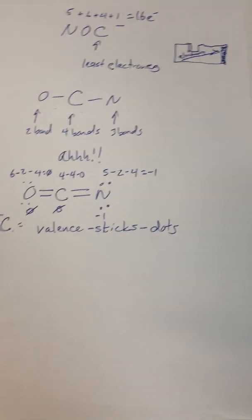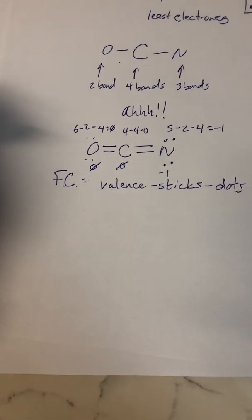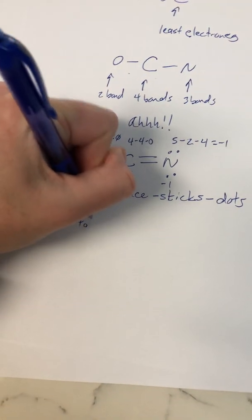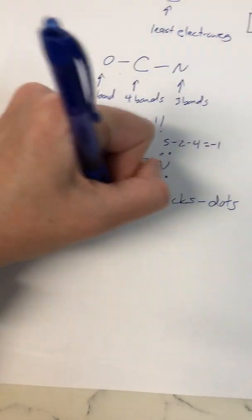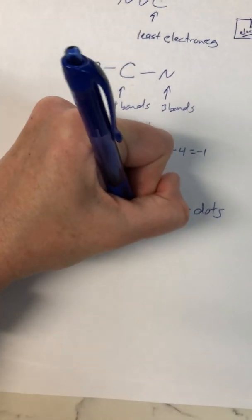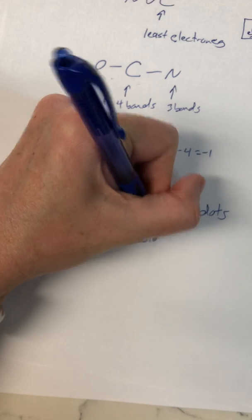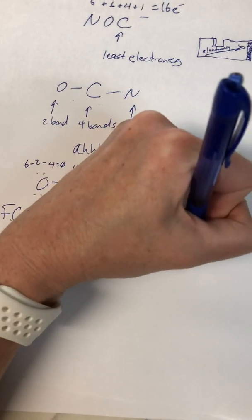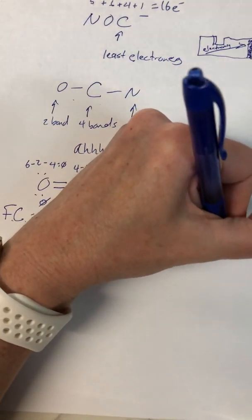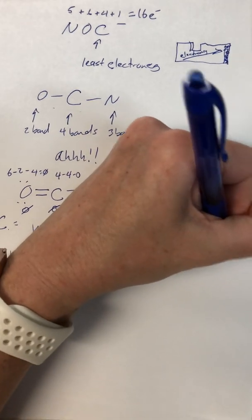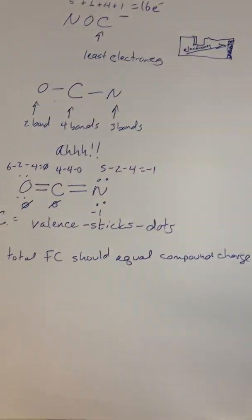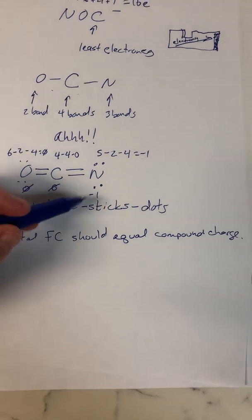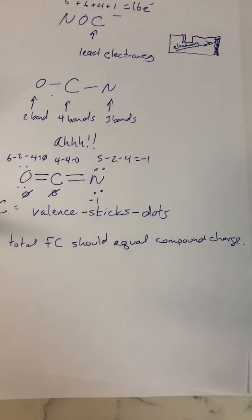For nitrogen: 5 valence electrons minus 2 sticks minus 4 dots equals a negative one formal charge. That's great because the total formal charge should equal the compound charge — zero plus zero plus negative one equals negative one. That matches.